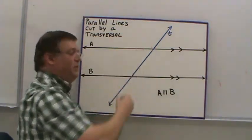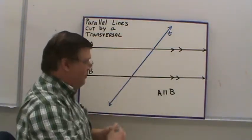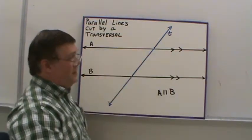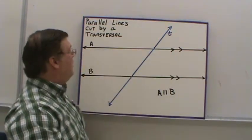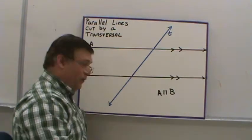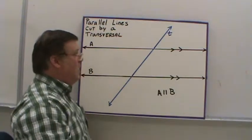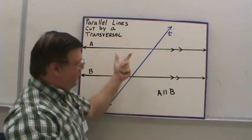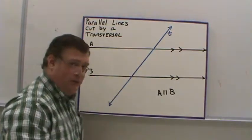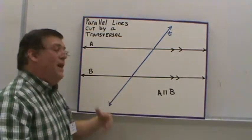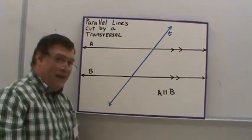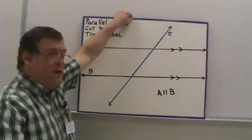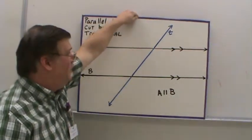This blue line cutting through the two parallel lines — any line that cuts through two parallel lines is known as a transversal. And there are properties of the angles created by this transversal cutting through two parallel lines, and there's a lot of vocabulary involved, so this video is all about that vocabulary.